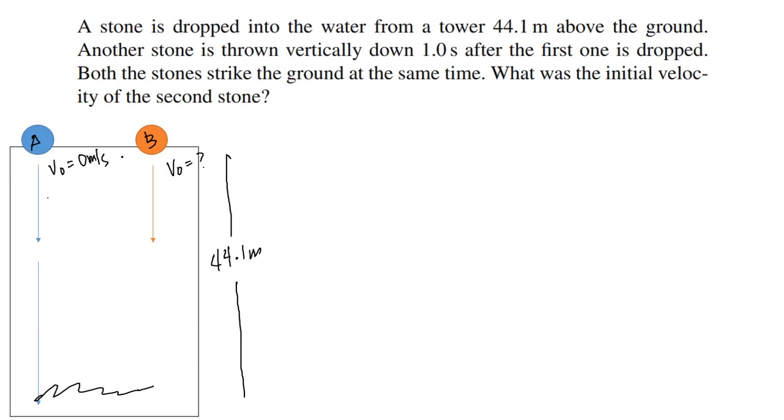Meron tayo ditong binigay din na after one second, ibig sabihin bago ibinato si stone B, nakapag-travel na ng one second si stone A. Magandang point yun, kasi pwede natin makompute yung total time ng stone A yung buong 44.1 meters, tapos i-minus natin yung one second. That means yun yung total time ni stone B, and then by that makukuha na natin yung initial velocity nya.